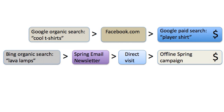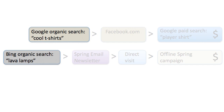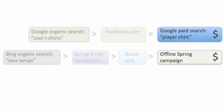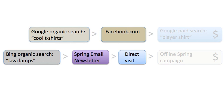Often, you want to understand the role that each channel plays in conversions. For example, which channels and keywords tend to initiate a sales cycle? This is the role of first interaction. Which channels and keywords tend to close sales? This is the role of last interaction. And which channels and keywords are visitors interacting with during the sales cycle, but prior to actually buying? This is the role of assist interaction.